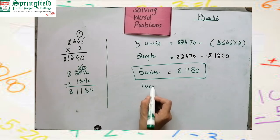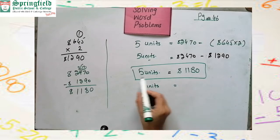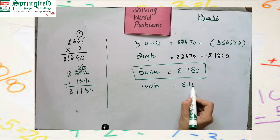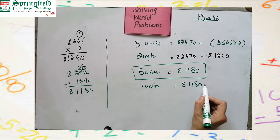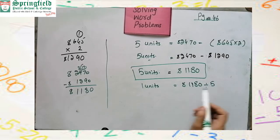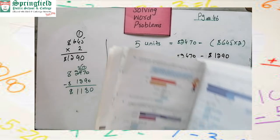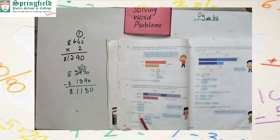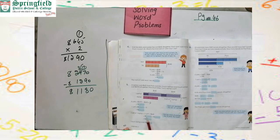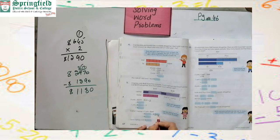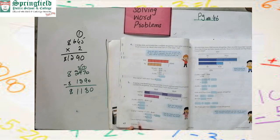5 units = $1180, so one unit = $1180 divided by 5. Find the answer — that will be the printer price. Then the cost of one laptop equals one unit price plus $645. Find the final solution for one laptop's cost. It's your task.